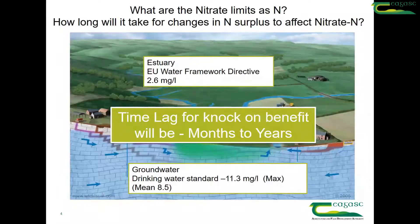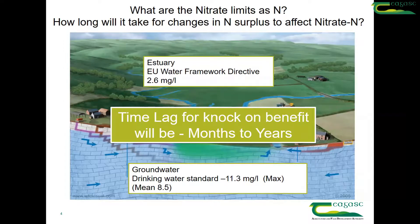How long will it take for that nitrate to travel from the soil through this leached pathway to groundwater and to surface water? In freely drained areas, it can take months to years, but as we move towards moderate drainage, it can take up to decades.